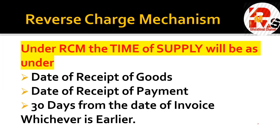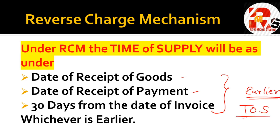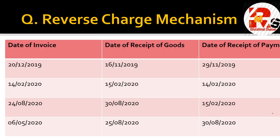Next part is Reverse Charge Mechanism, in short called RCM. For RCM, you have to compare 3 points: Number 1 - date of receipt of goods; Number 2 - date of receipt of payment; Number 3 - 30 days from the date of invoice. Whichever is earlier among these three will be the time of supply.